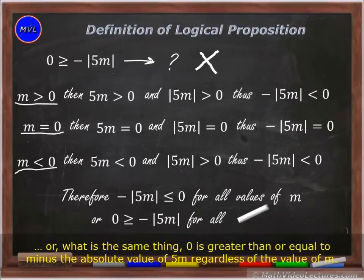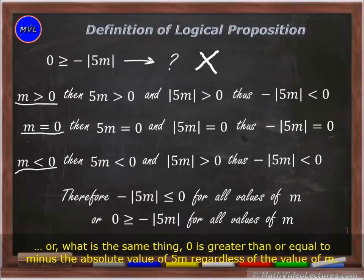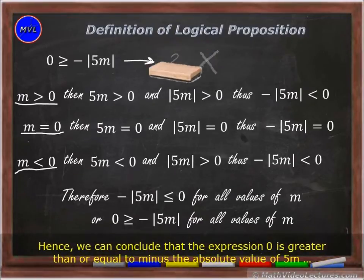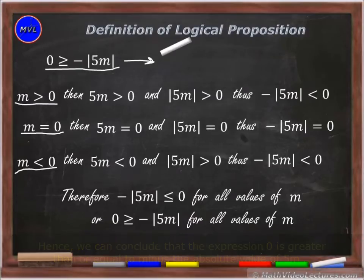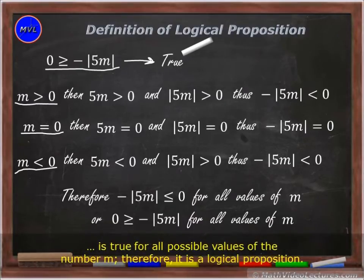Or, what is the same thing, 0 is greater than or equal to negative the absolute value of 5m, regardless of the value of m. Hence, we can conclude that the expression '0 is greater than or equal to negative the absolute value of 5m' is true for all possible values of the number m. Therefore, it is a logical proposition.